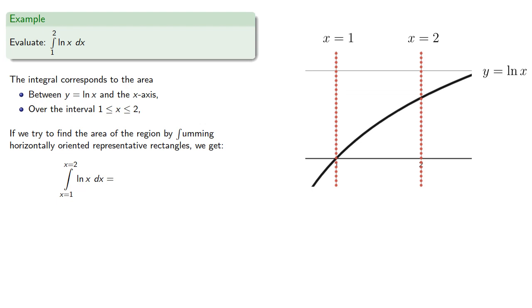If we try to find the area of the region by summing horizontally oriented representative rectangles, we get the following. So the length of each rectangle, well that's end minus beginning, but since our rectangles are running horizontally, these are the x-coordinates of the end and beginning. So regardless of where the rectangle is, the end is always at x equals 2.